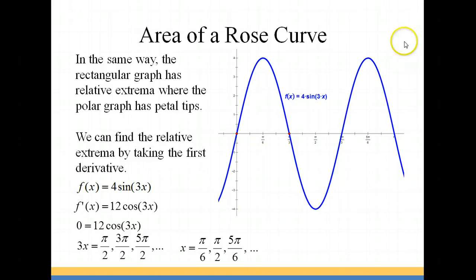Then at 5 pi over 6, we're back to positive 4, so we have another relative maximum point.